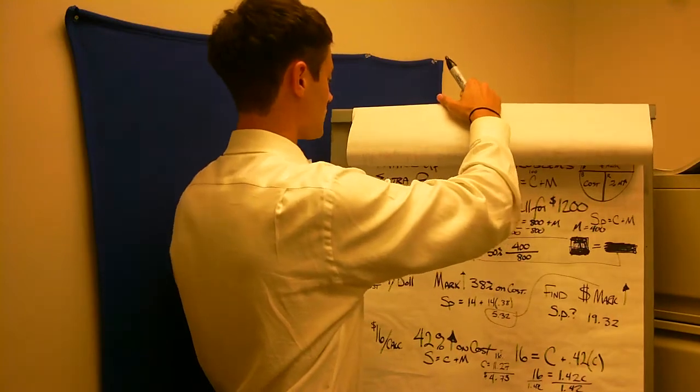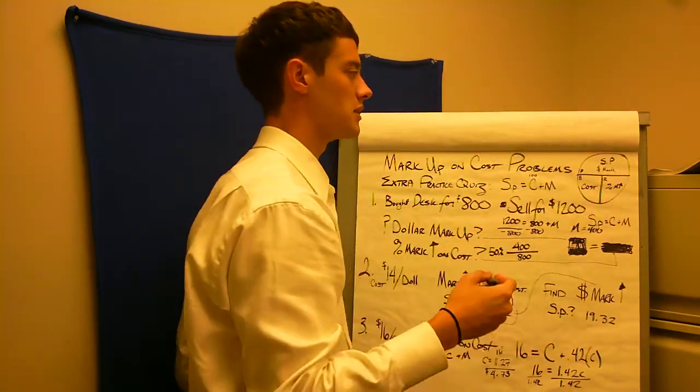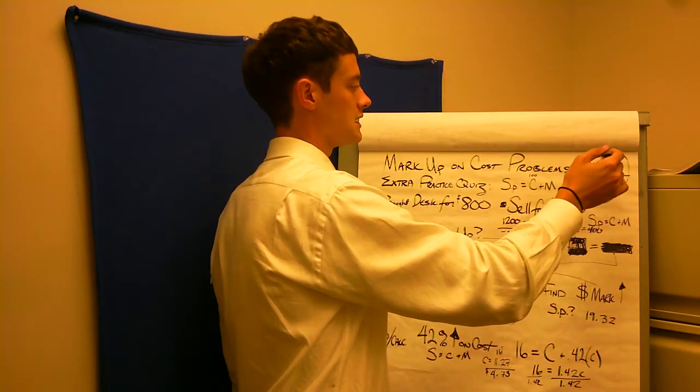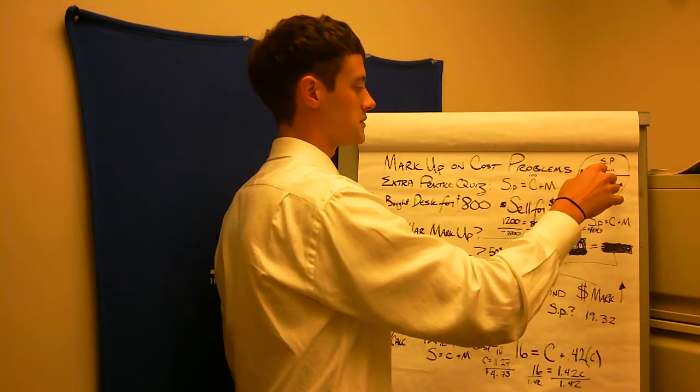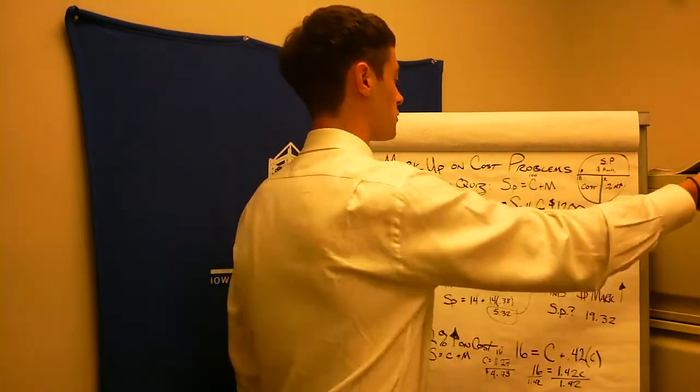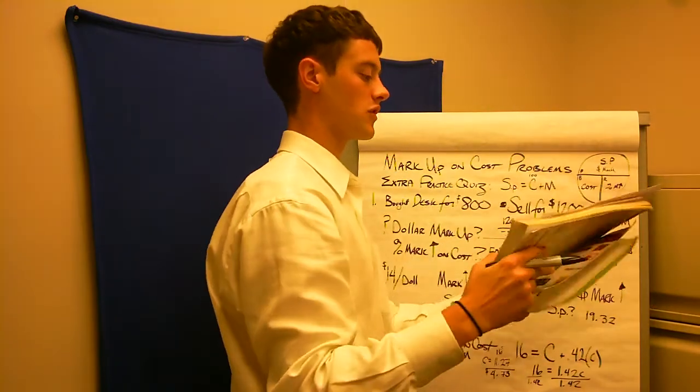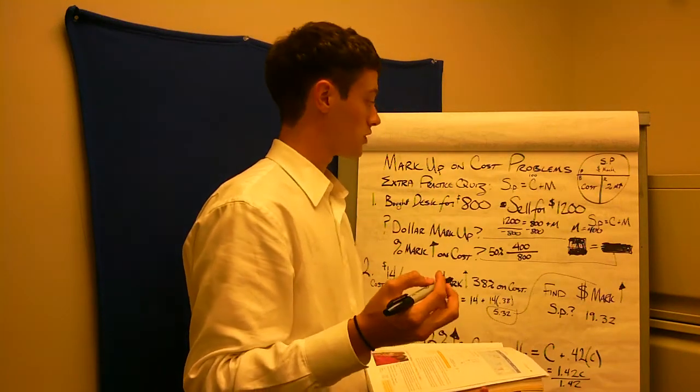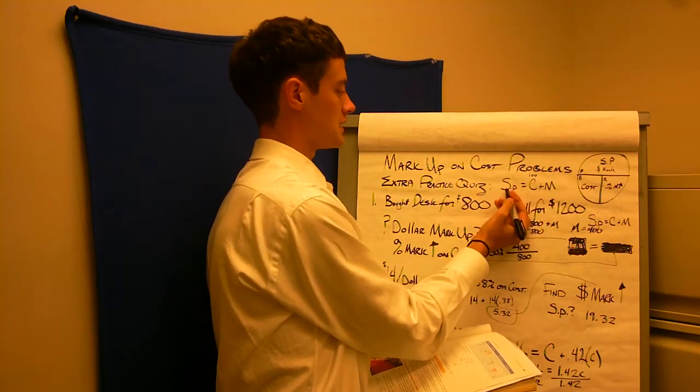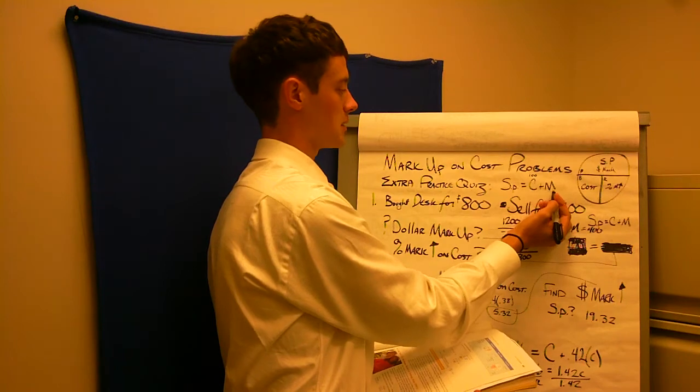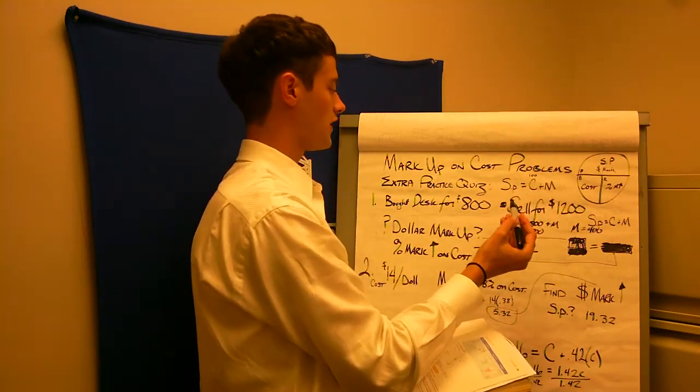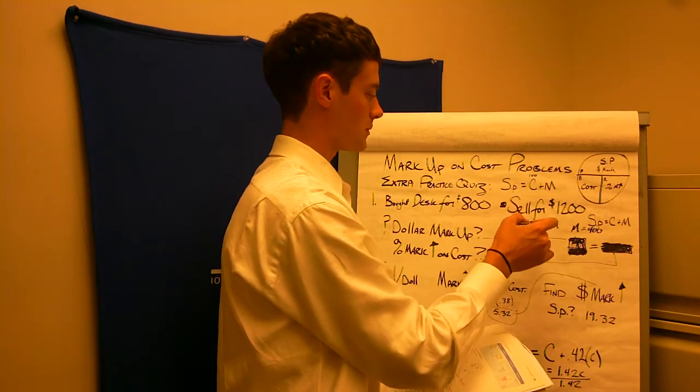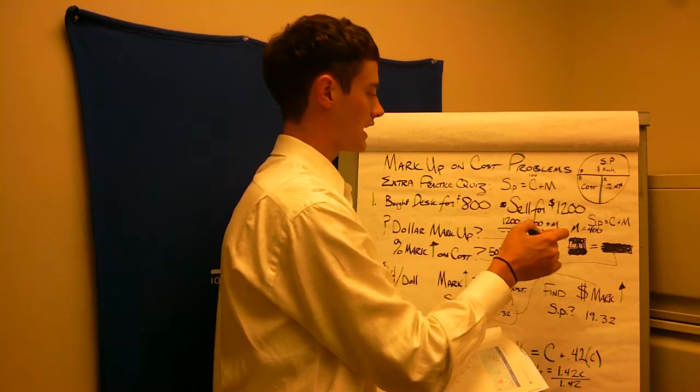So we're going to do the extra practice quiz because I believe the answers are given to you on the regular practice quiz in the back of your book. So I drew my circle and I have my selling price or my dollar markup over my cost times my percent markup. And number one says Irene bought a desk for $800 from a supply house. She plans on selling it for $1,200. What is Irene's dollar markup? So I have my formula and I know my selling price is equal to my cost plus my markup. And I know my cost is 100% here. So if I put this into the formula, I see that it cost me $800 and the selling price is $1,200. What is my markup? Well, I have to get markup by itself. So I bring $800 over and I get a markup of $400.